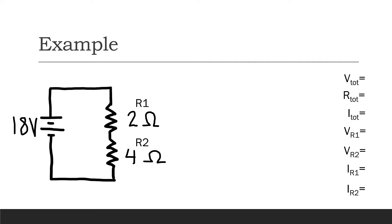Our basic strategy is to first simplify the circuit down to one equivalent resistance. Before we start, let's write down any quantities we already know. The total voltage is the voltage from the power supply, and we can see that's 18 volts — we can read that right from our diagram. Now let's apply Ohm's Law by simplifying the circuit down to one equivalent resistance.